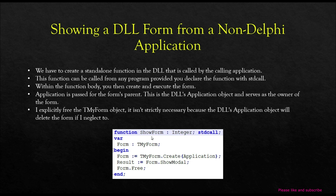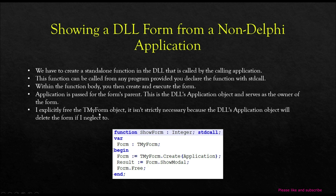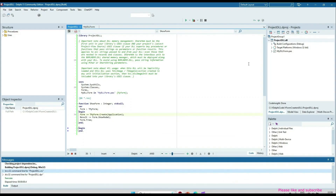Within the function body you can create and show the form. This is MyForm — the form from the DLL. After creating it, we pass the Application parameter so Application is the parent for the form. This is the DLL application object, and it is passed as the owner of the form. It explicitly frees the MyForm object, though this is not strictly necessary because the DLL application object will delete the form if neglected.